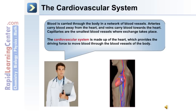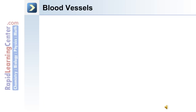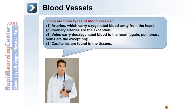The cardiovascular system is made up of the heart, which provides a driving force to move blood through the blood vessels. There are three types of blood vessels in the body: arteries, veins, and capillaries.